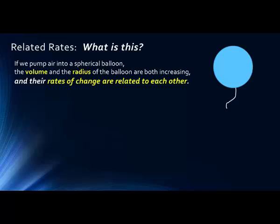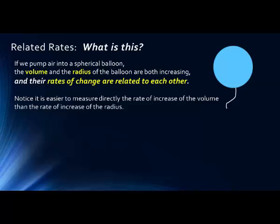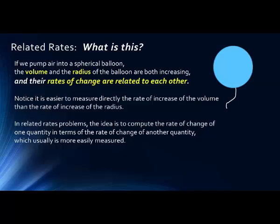We also have a formula that relates volume to the radius. In this example, it's easier to measure directly the rate of increase of the volume — we could put some kind of measurement on the amount of air going into the balloon — perhaps easier than measuring the increase of the radius, which would require measuring the circumference since we can't see inside the balloon. In related rates problems, the idea is to compute the rate of change of one quantity in terms of the rate of change of another quantity, where the second quantity is more easily measured.